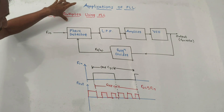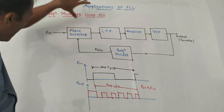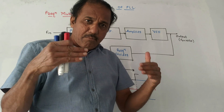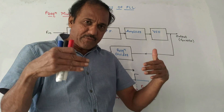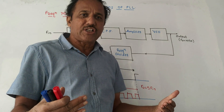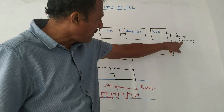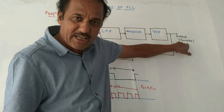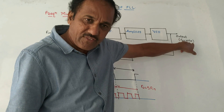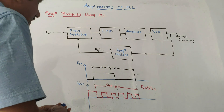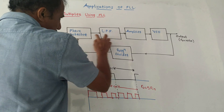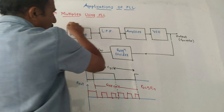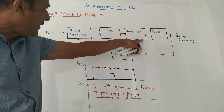The first application is frequency multiplier using PLL. As the name indicates, at the output you are getting multiplied frequency. That means the input frequency will be multiplied by some integer value. For example, output F0 equals n times Fn, where Fn is the input frequency. These four blocks form the block diagram of PLL, which we have already discussed.